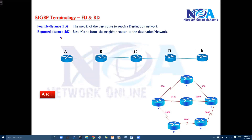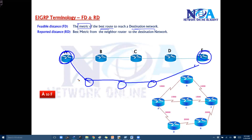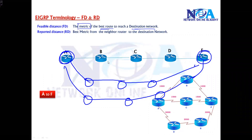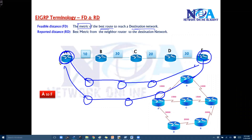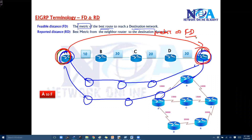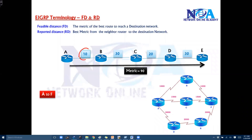The feasible distance is nothing but the total metric — the actual metric to reach that particular destination. In this example, from A to reach E there are multiple routes. Assume these are the individual metric values on each interface — I'm using simple values here for understanding. So from my router to reach this particular destination, what is the overall metric? That metric is considered as the feasible distance. In this example, the feasible distance is 90.